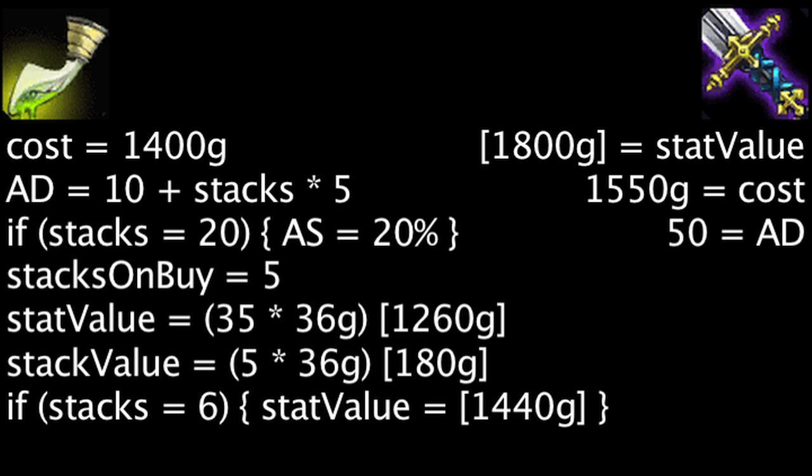To be more cost-effective than a BF Sword, a Sword of the Occult needs at least 8 stacks. At 20 stacks, one will have saved 3,160 gold on this item, making it incredibly cost-effective in this state.